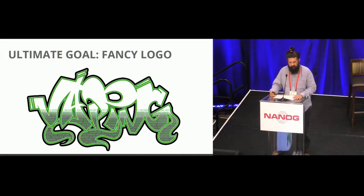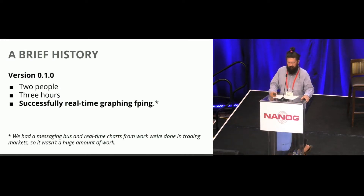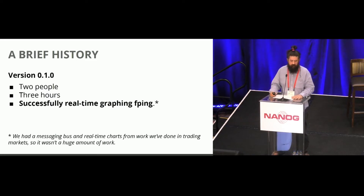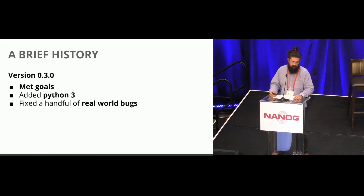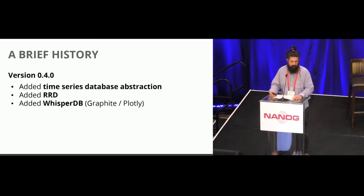Our ultimate goal was we needed an excuse to have a fancy logo. So just the brief history: it took two people and three hours, and we were successfully grabbing fping, which was obviously the first plugin we made. We kind of cheated, because we already had a very fast messaging bus and trading charts from work we'd done in the financial trading industry. We deployed it to a handful of sites and had some other people using it, which let us fix real-world bugs.